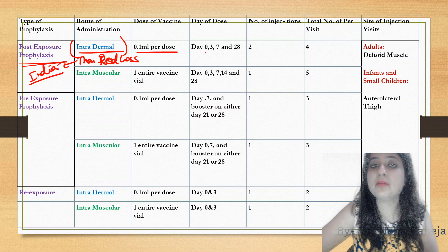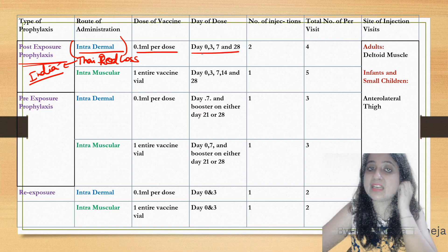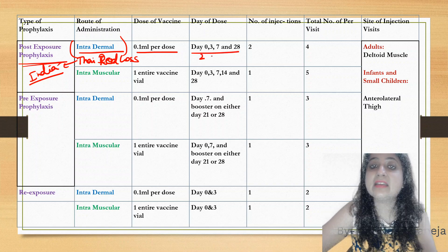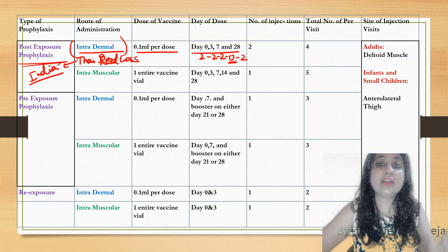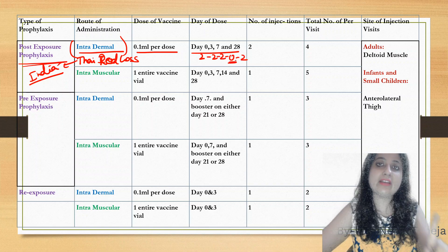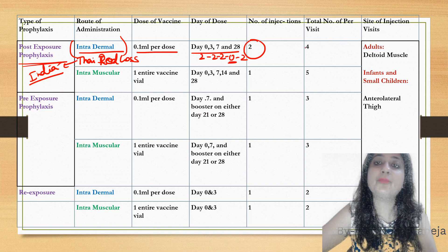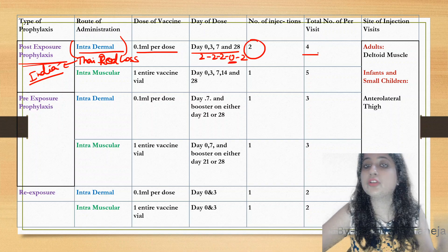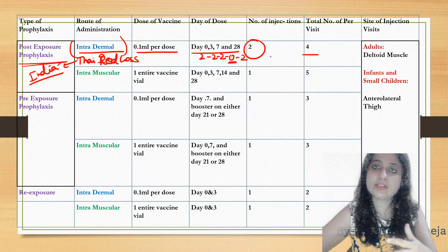The intradermal regimen is given on days 0, 3, 7, and 28 — written as 2-2-2-0-2 — on two sites, not given on day 14. Total visits: four, with two injections per visit. Site of injection for intradermal is both shoulders (deltoid).